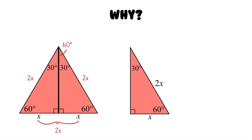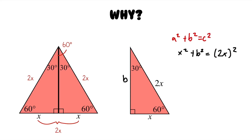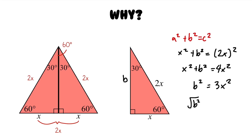To find the longer leg, we use the Pythagorean theorem. Let's call the longer leg b. We have a squared plus b squared equals c squared, so x squared plus b squared equals (2x) squared, which gives x squared plus b squared equals 4x squared. Subtracting x squared from each side gives b squared equals 3x squared. Taking the square root of both sides gives b equals x root 3. So the longer leg is x root 3, and that's how we derived this pattern.